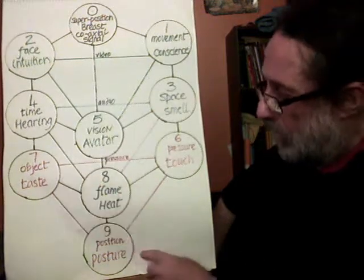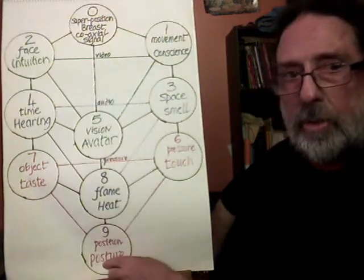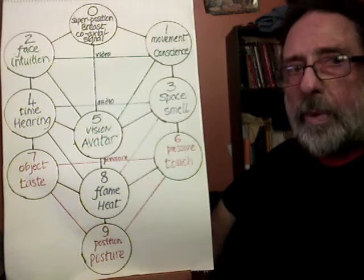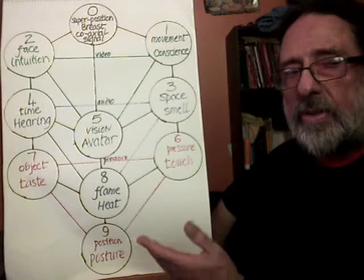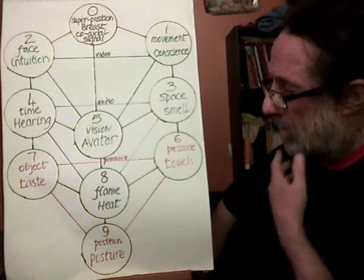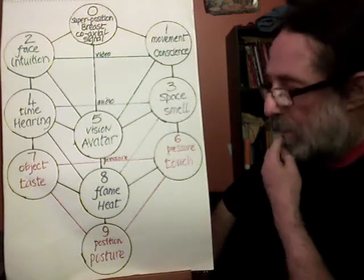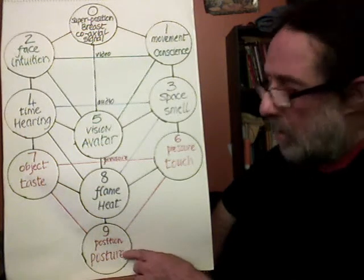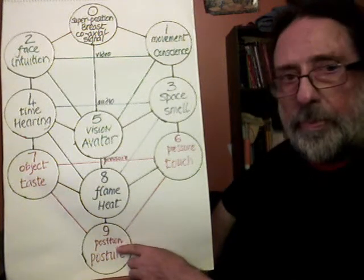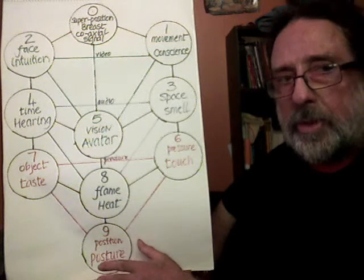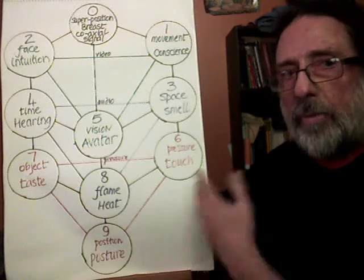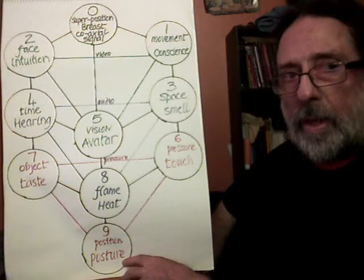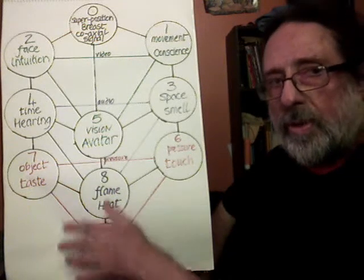Starting with this circle — this circle represents the world. The virtual reality in our minds that represents the world, a projection of the world. And obviously in the world we have position. All the objects are in a position, and we have our own position, which we know is posture. And then different postures lead to different actions.